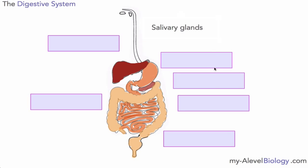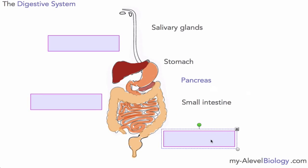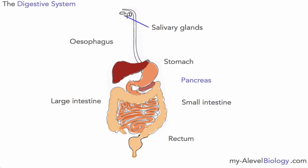So the parts are as follows: we have salivary glands, stomach, pancreas, small intestine, rectum, large intestine, and the esophagus. In order to see where these parts are, the salivary glands are here. I haven't drawn the mouth all around the edge here, but the salivary glands are found just under the tongue — two positions — there's one actually above the sort of food pipe here as well.